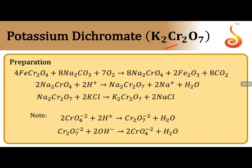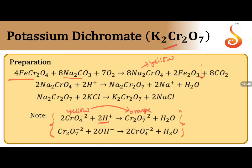Potassium dichromate (K₂Cr₂O₇) preparation: it is obtained from chromite ore (FeCr₂O₄). Roasting chromite ore in presence of sodium carbonate gives sodium chromate (yellow color solution), in which Fe₂O₃ is insoluble and is filtered off. The CrO₄²⁻ yellow solution can be inter-converted into Cr₂O₇²⁻ (orange) by providing an acid medium.